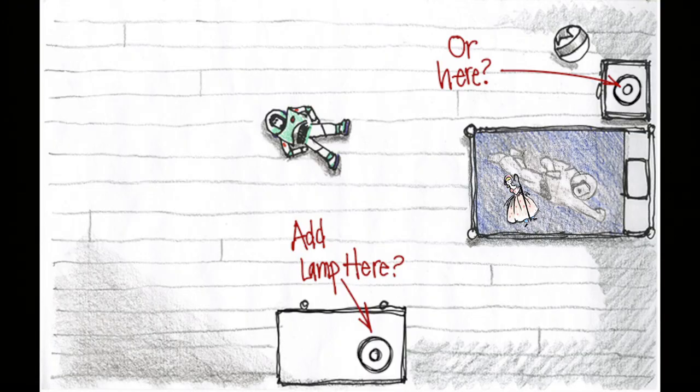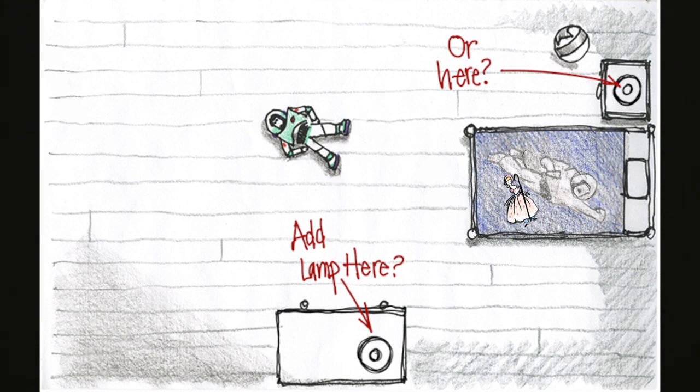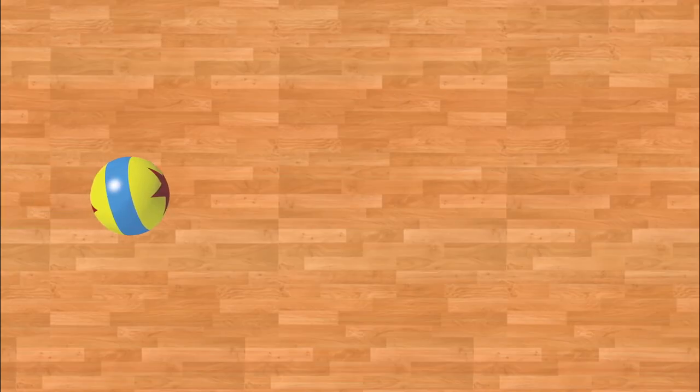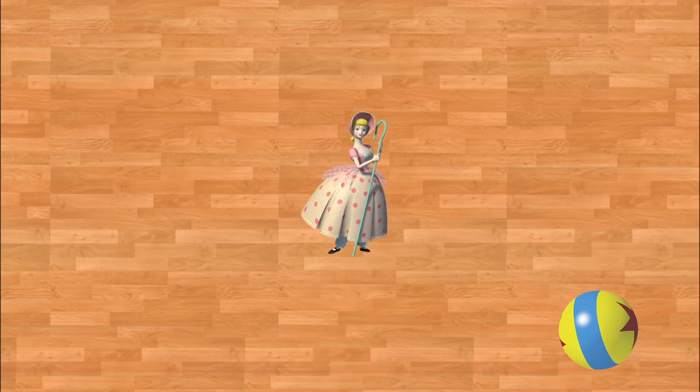Your first assignment is to select objects from the model catalog to create a first pass at that drawing you got from the story department. To keep things simple for this first assignment, we've only given you the translation operation, so you won't be able to lay out the whole shot. Your job is to figure out which objects you can place using only translation.